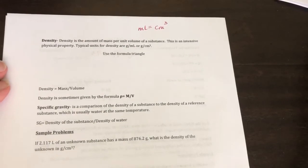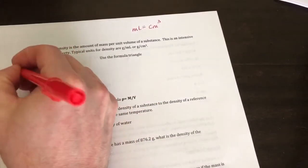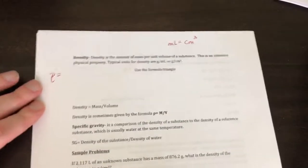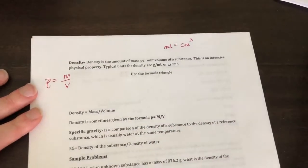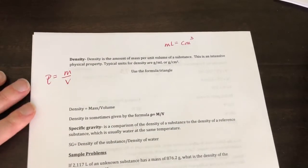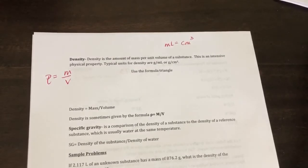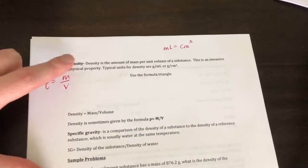So the formula for density is rho is equal to mass over volume. So when we get into upper level chemistry and physics, we don't write density by d. We write it by rho. Okay, the Greek letter rho. It's mass over volume.